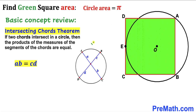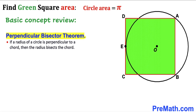In the intersecting chords diagram, chords AC and BD intersect at a point such that A times B equals C times D. Additionally, the perpendicular bisector theorem states that if a radius of a circle is perpendicular to a chord, then the radius bisects the chord into two equal parts.